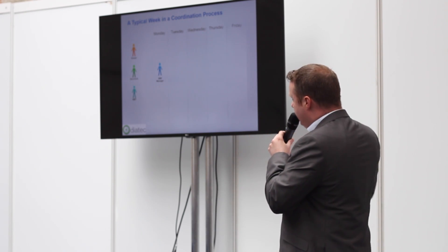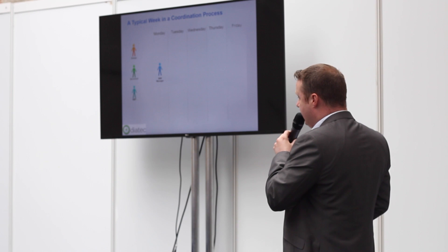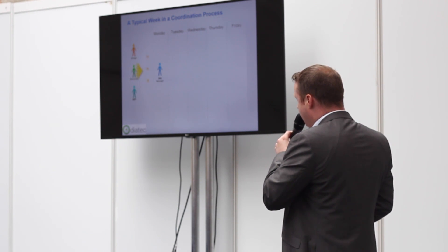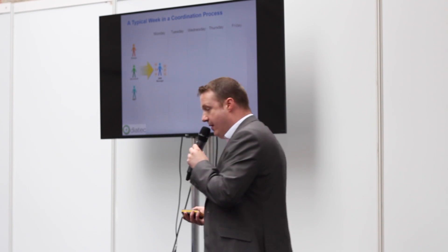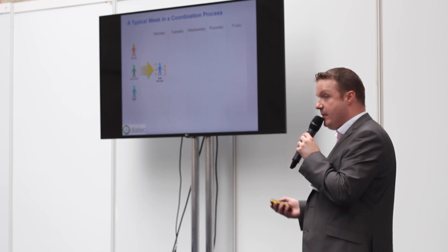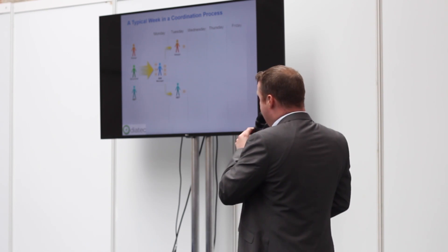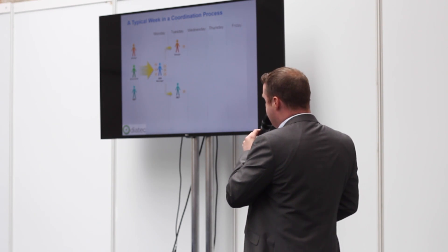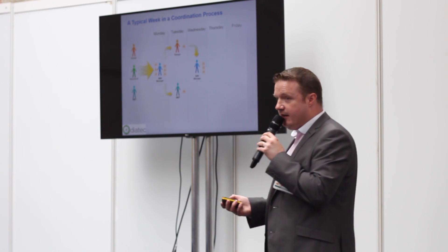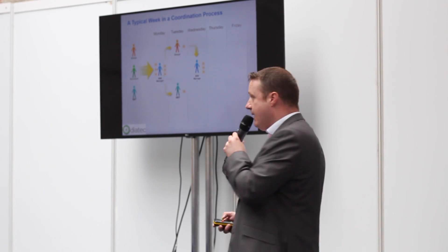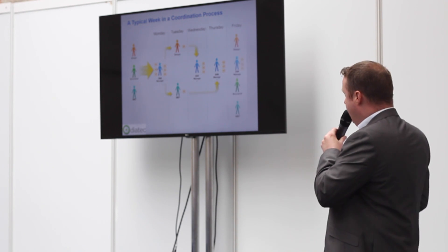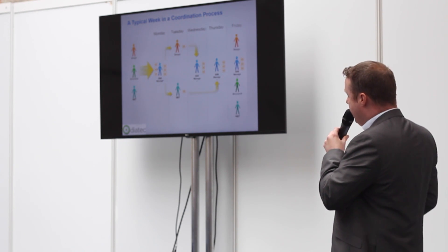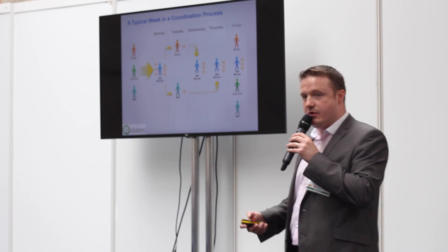In a typical coordination week, three main discipline teams are working on their individual models. That information is passed on to the BIM coordinator, who then has to disseminate and work through that information — it could be Monday morning. That information is then passed back to the relevant design team members to work on changes and issues. They might decide on a Wednesday that they've done enough and pass it back to the BIM manager, who may then take a day to work on that.